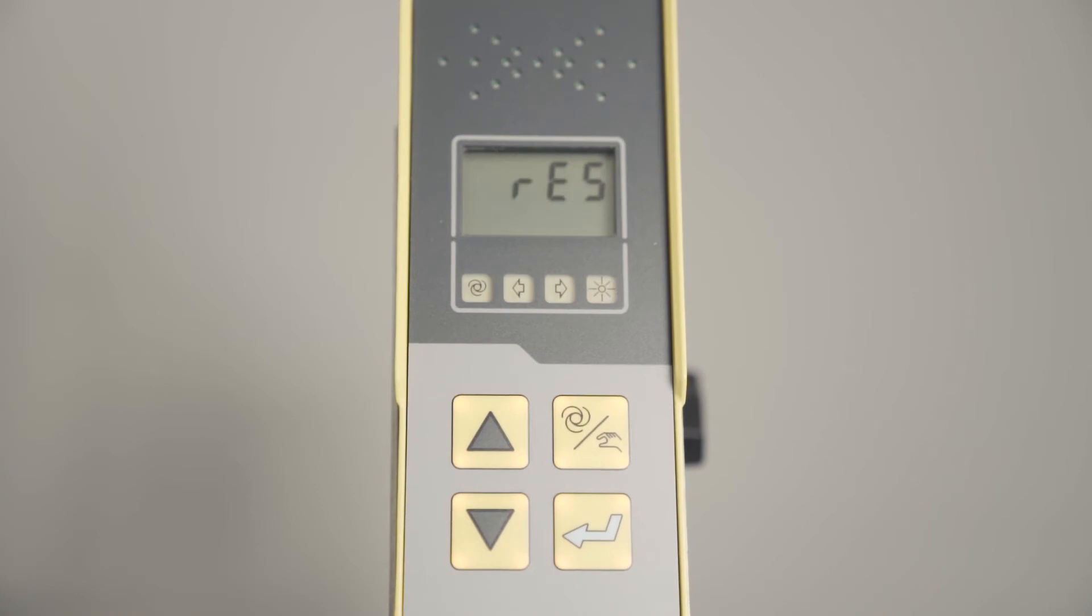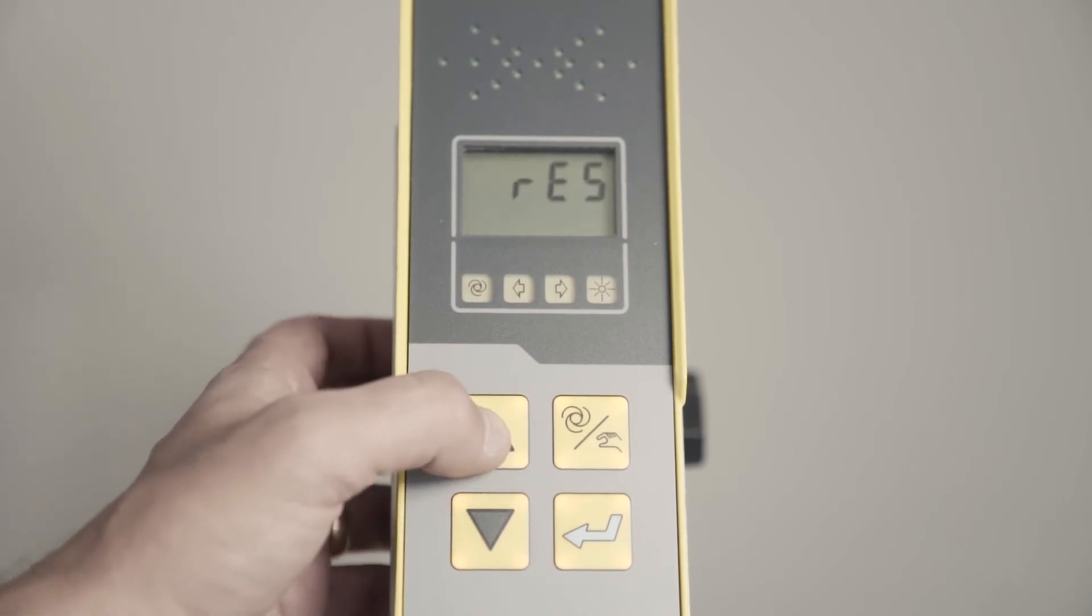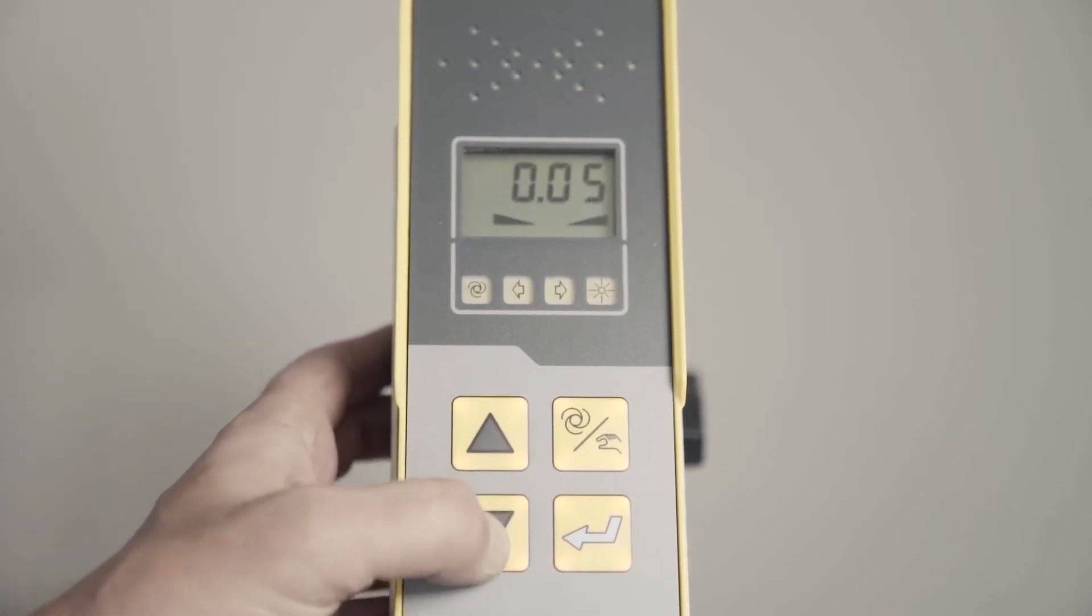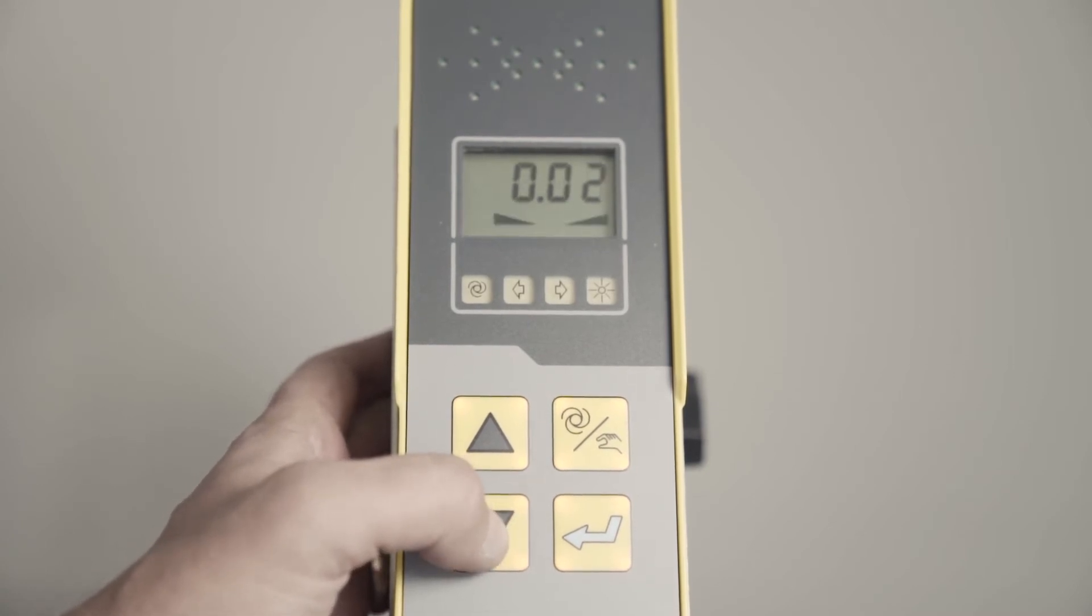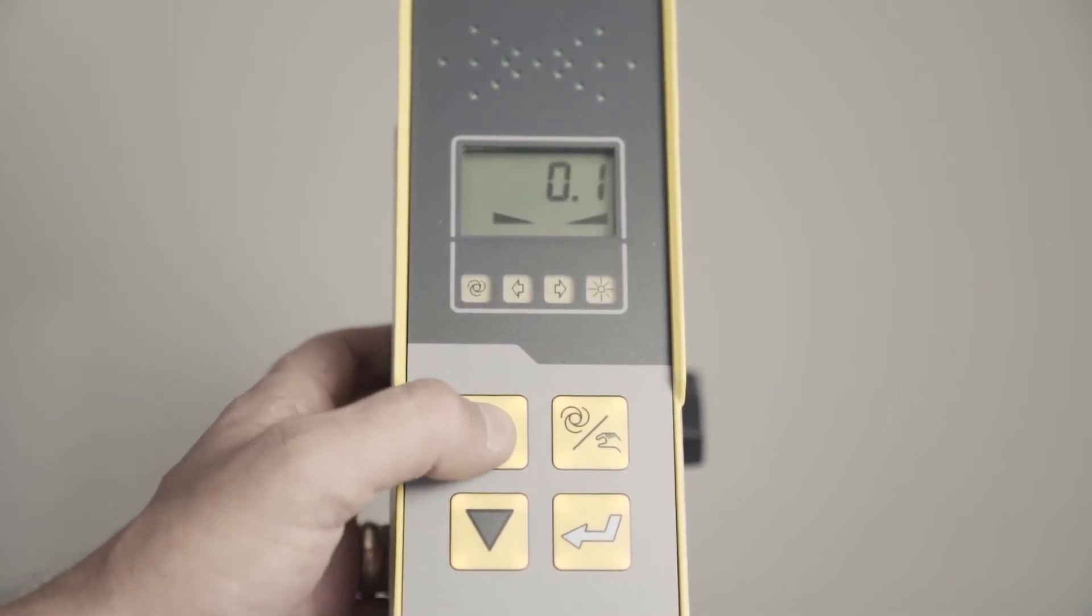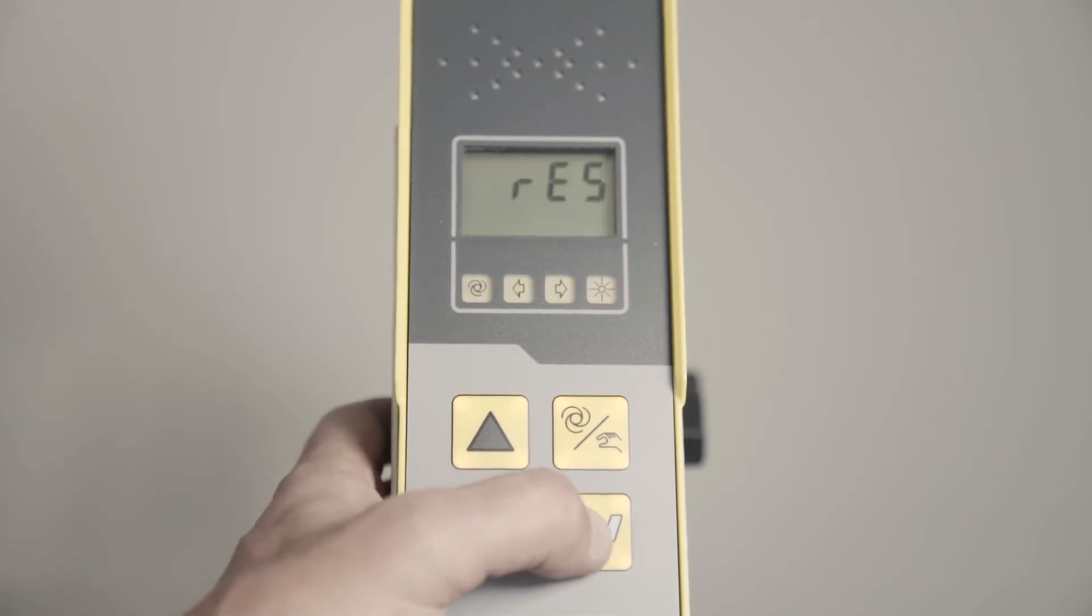Our resolution, that's how your slope sensor is going to read out. Do you want it in tenths? Do you want it in five-hundredths? Two-hundredths? Typically I'll leave it in tenths so it's not so reactive. Your numbers aren't constantly moving, but feel free to put it wherever you want.